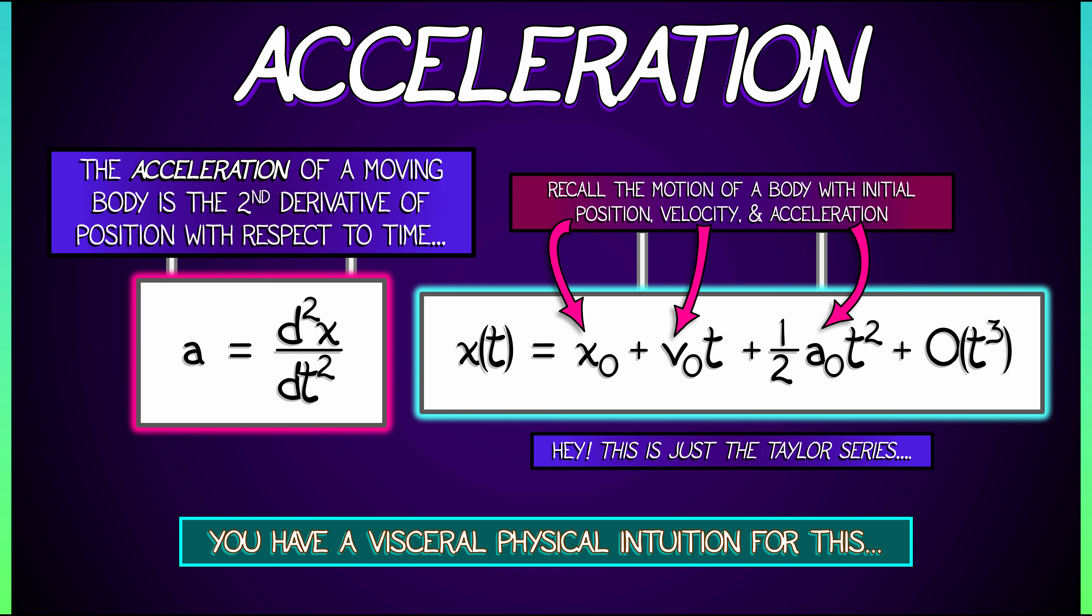Why is there that 1 half in front of the at squared? That's really 1 over 2 factorial, because this is the second order term in the Taylor series of position. Okay, so that's a second derivative interpreted in terms of acceleration.